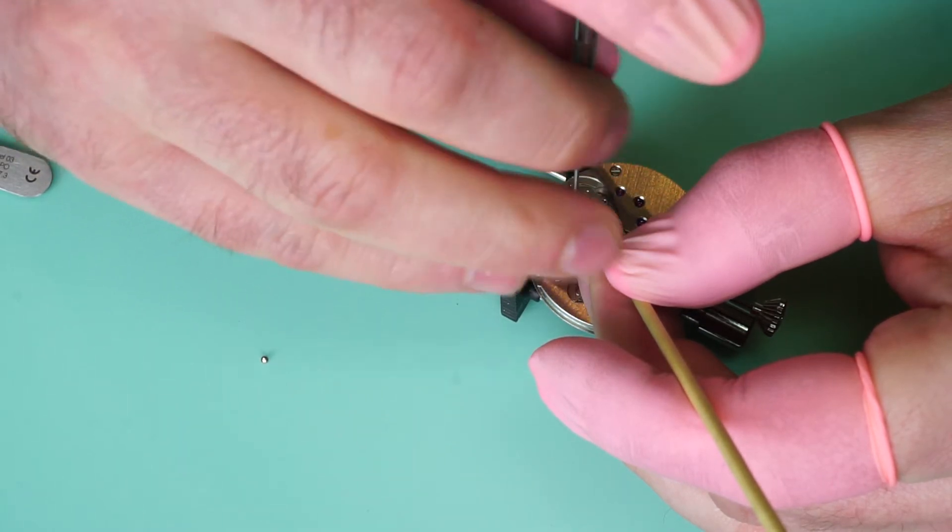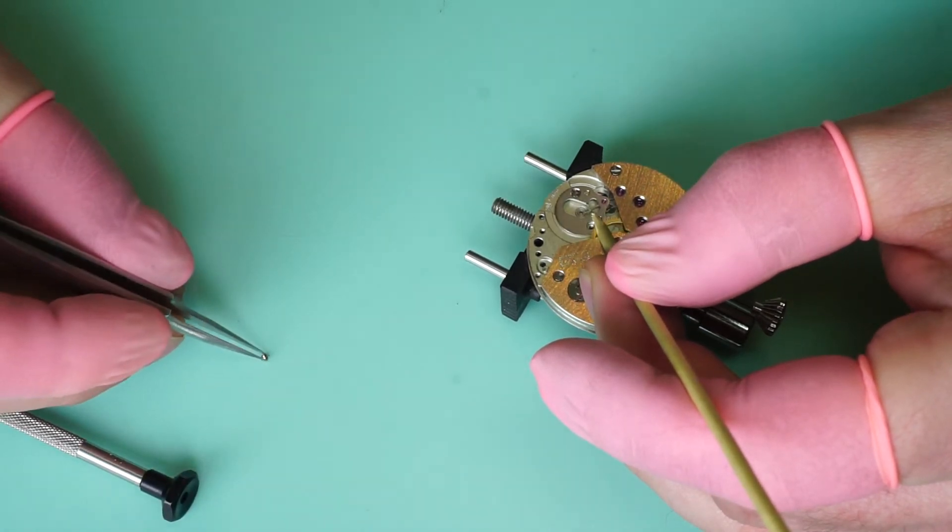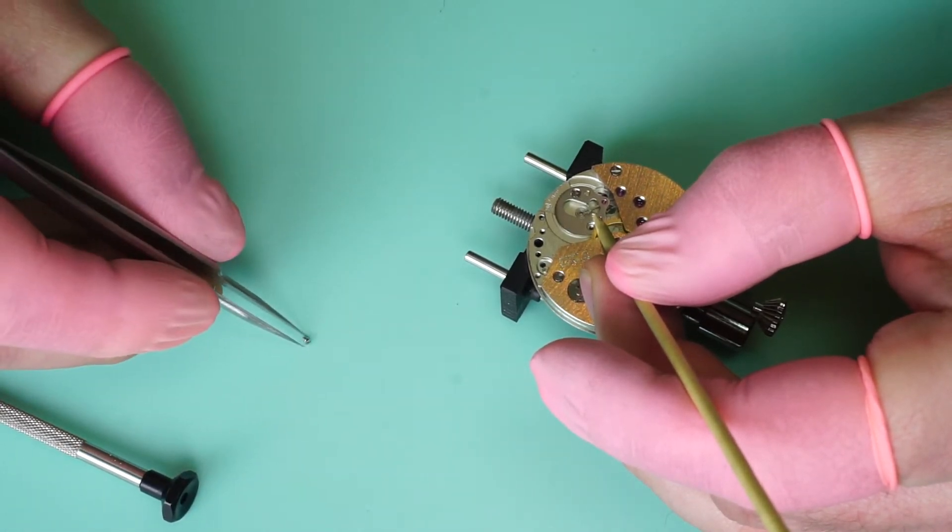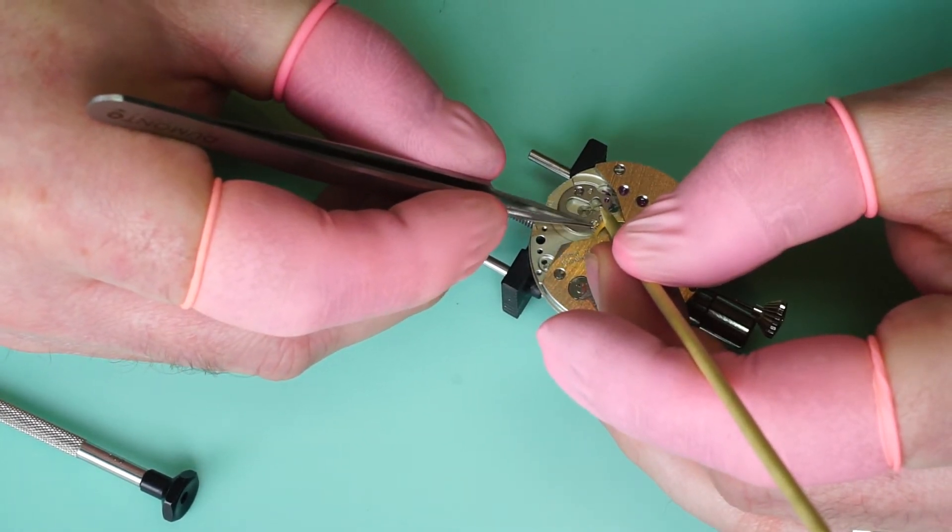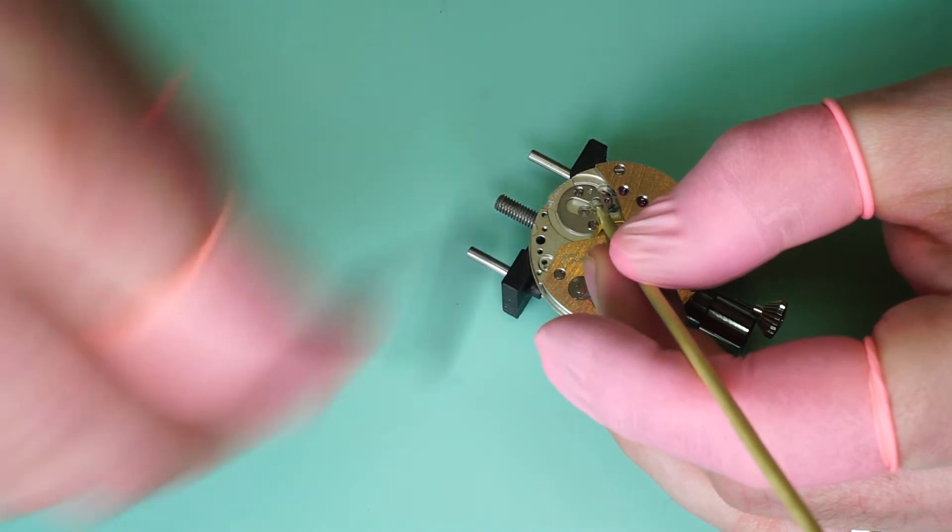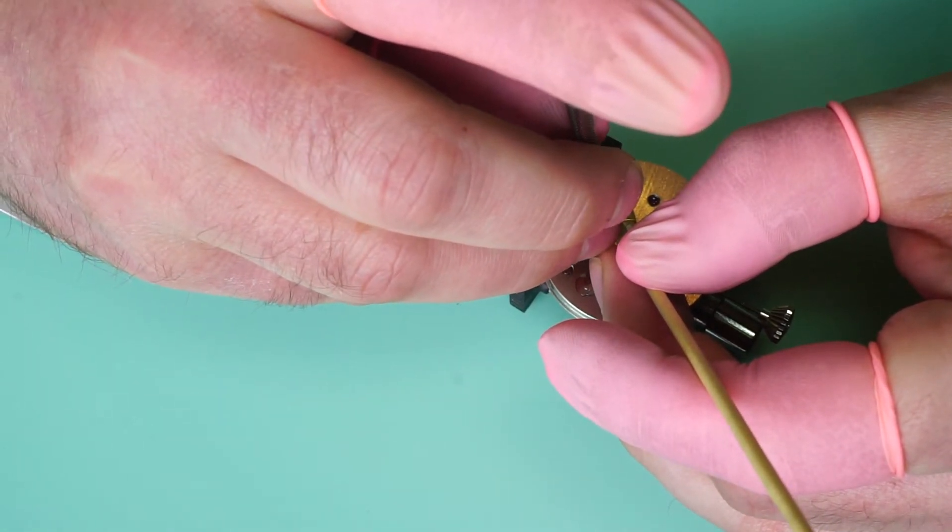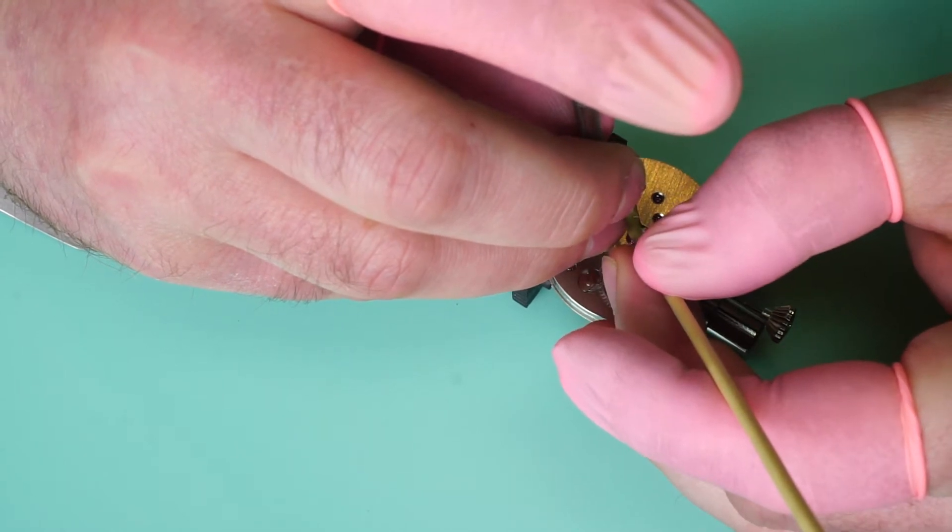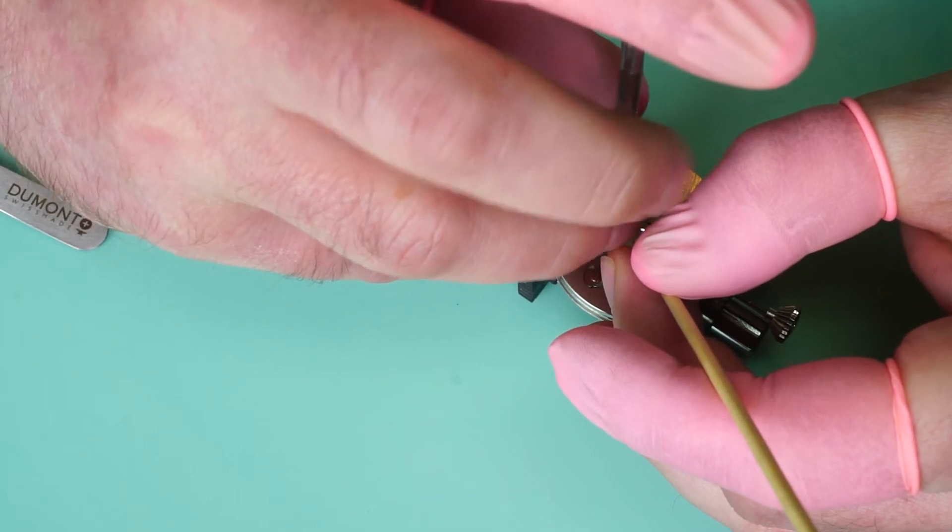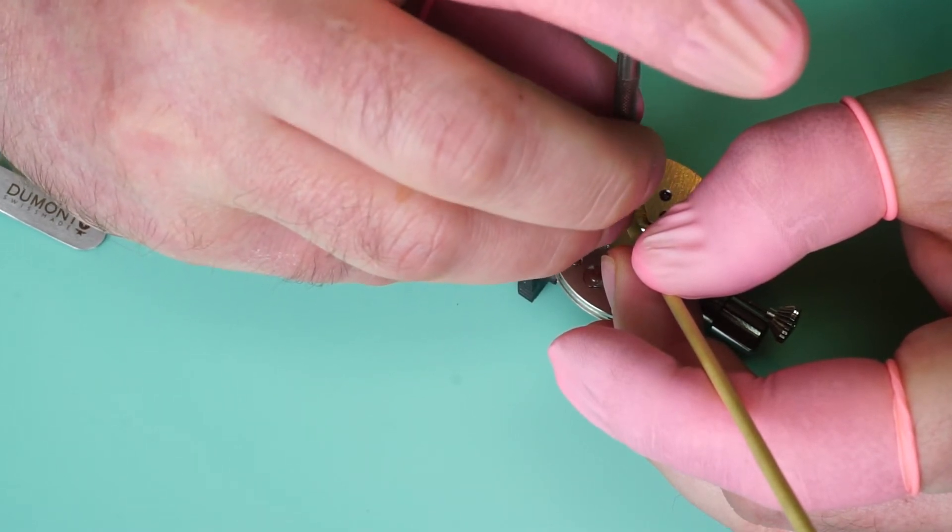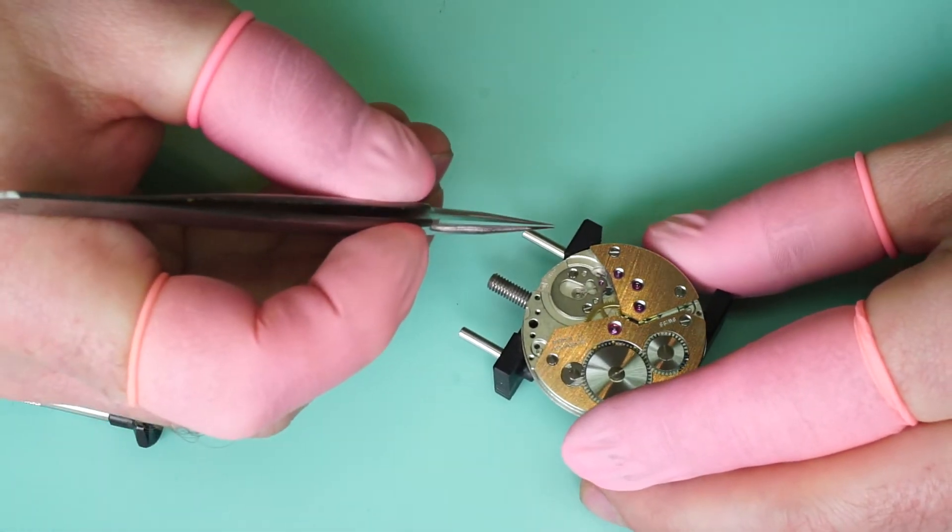So we're going to tighten the screws down until they just about grip. You're not going to tighten them down fully, because if you tighten them down fully before the pivots are in place you are quite likely to snap the pivots off and you'll end up having to try and locate a new part. So the screws in the pallet cock are just snugged down, only just.